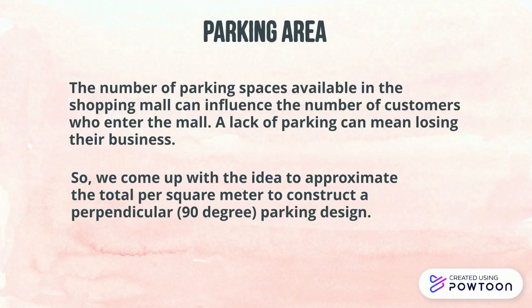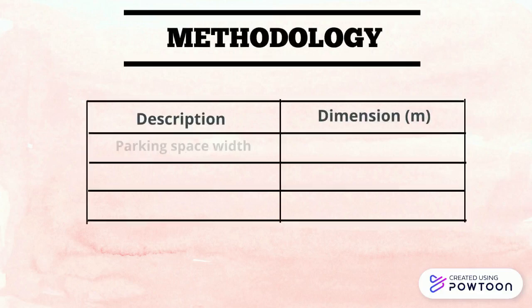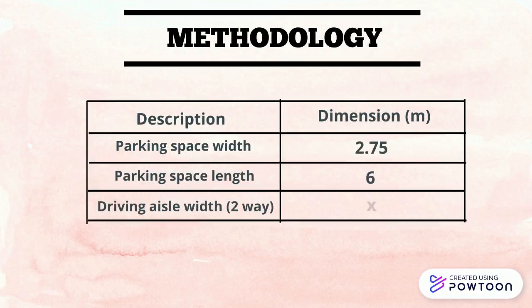Now let's move on to the information of our calculation. We assume that parking space width is 2.75 meters, parking space length is 6 meters, and the driving aisle width (two-way) is variable x.